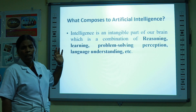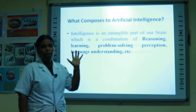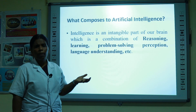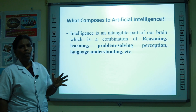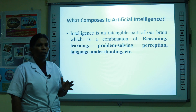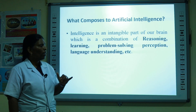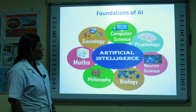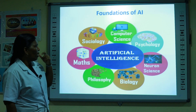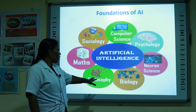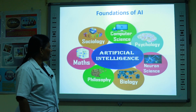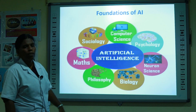What is AI composed of? Intelligence is an intangible part of the brain. It is a combination of reasoning, learning, problem solving, linguistics, and perception. Where can we use AI? AI can be used in computer science, psychology, neuroscience, biology, philosophy, mathematics, and sociology.